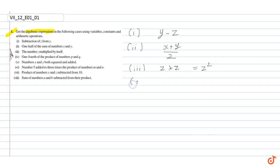Now the fourth part is one fourth of the product of numbers p and q. So p into q, we have to take one fourth. This means we have to multiply by one by four. This is equal to pq by four.